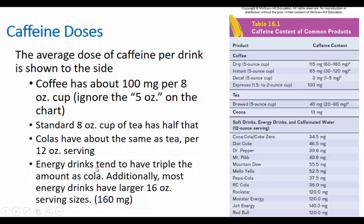Energy drinks have more caffeine per ounce than Coke. If you're averaging it out, the concentration is nearly the same as coffee — just a little less. But energy drinks come in tall cans, typically 16-ounce servings instead of 12, which is why the total dose bumps up to 160 milligrams. So: coffee is highest concentration at 100 mg per cup, tea is half that, cola is like tea but you drink more, and energy drinks are closer to coffee — and you also drink more.